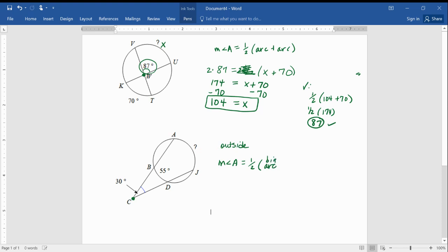it's not just any arc minus any arc. It's the big arc first minus the small arc. Okay, so we've got to look here and kind of gauge to see which one's bigger and smaller. Now, to me, I'm pretty sure we can trust that the bigger one is the one we don't know. Smaller is 55.